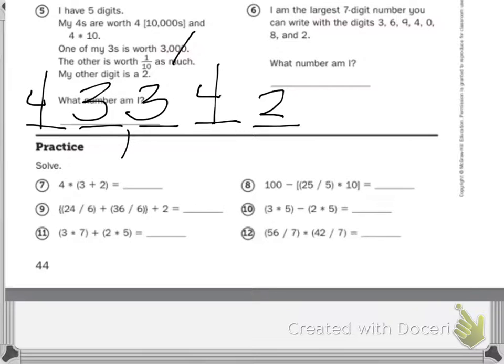Six says, I am the largest seven-digit number you can write with the digits three, six, nine, four, zero, eight, and two. What number am I? I think you guys can do that one on your own.